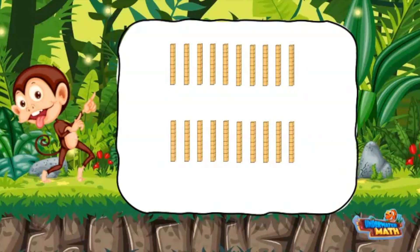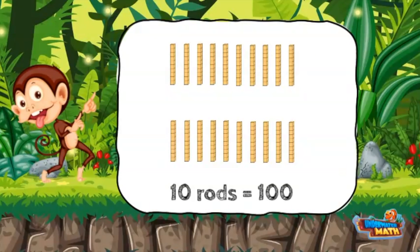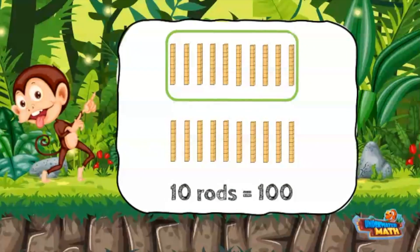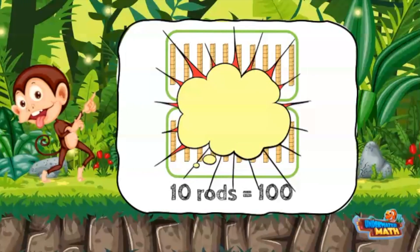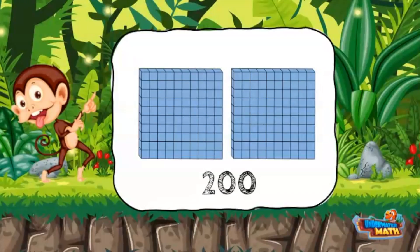Wow, that is sure a lot of 10 rods. I can count each rod by 10 or start by grouping the rods. It takes 10 rods to make 100, so I will see how many groups of 10 I can make. Here is one group and another. Two groups of 10 are equal to 200. Remember when bundling, 10 rods make 100, and each group has 10 rods.